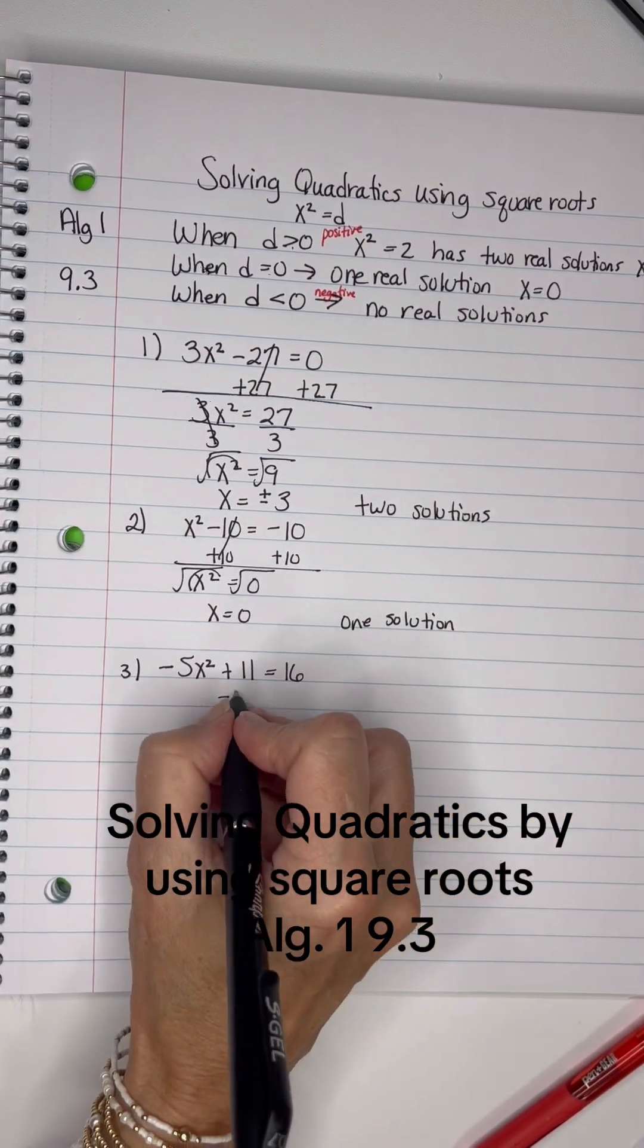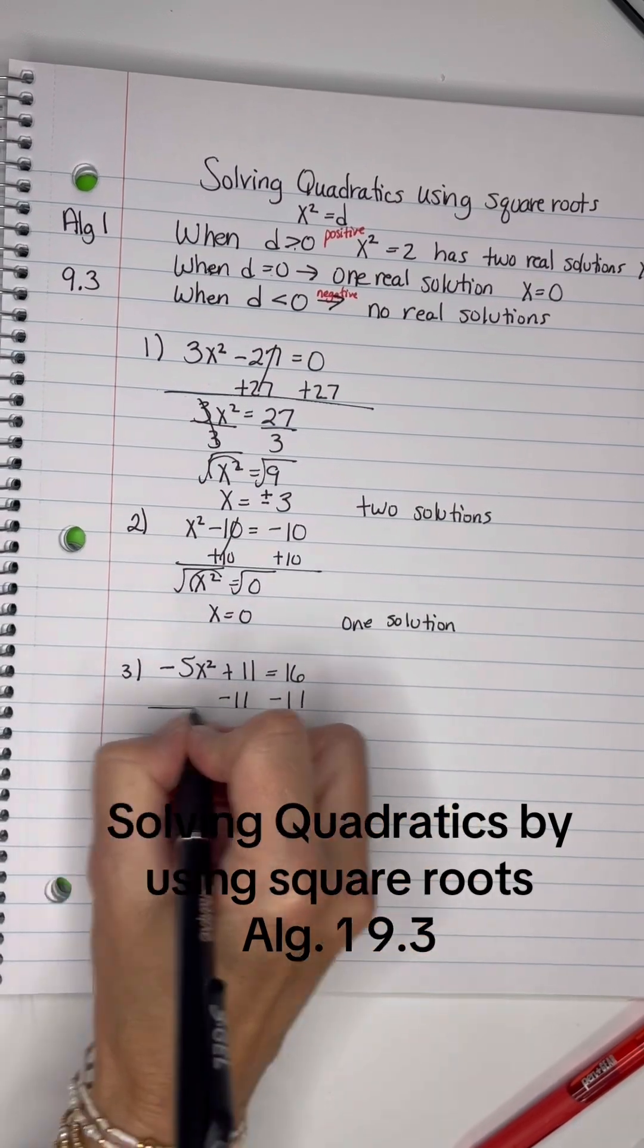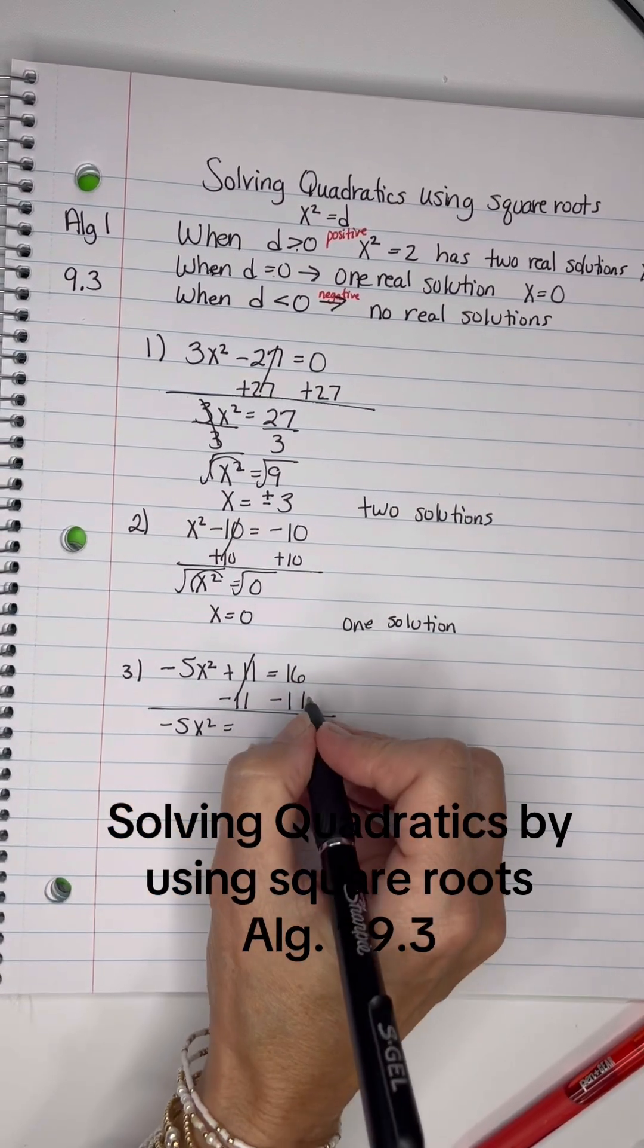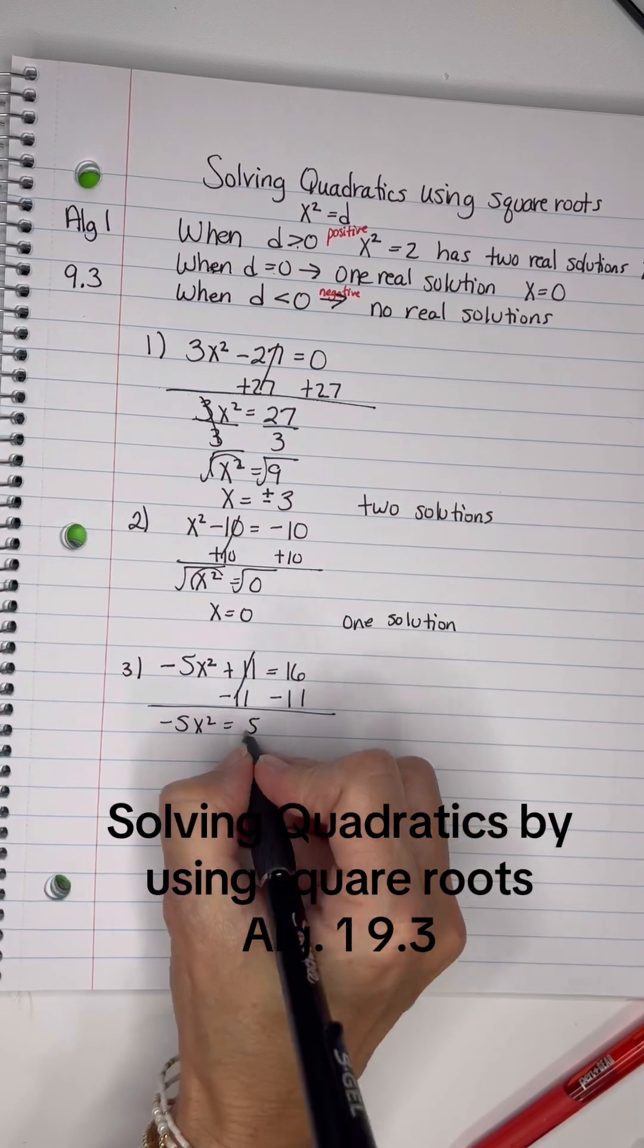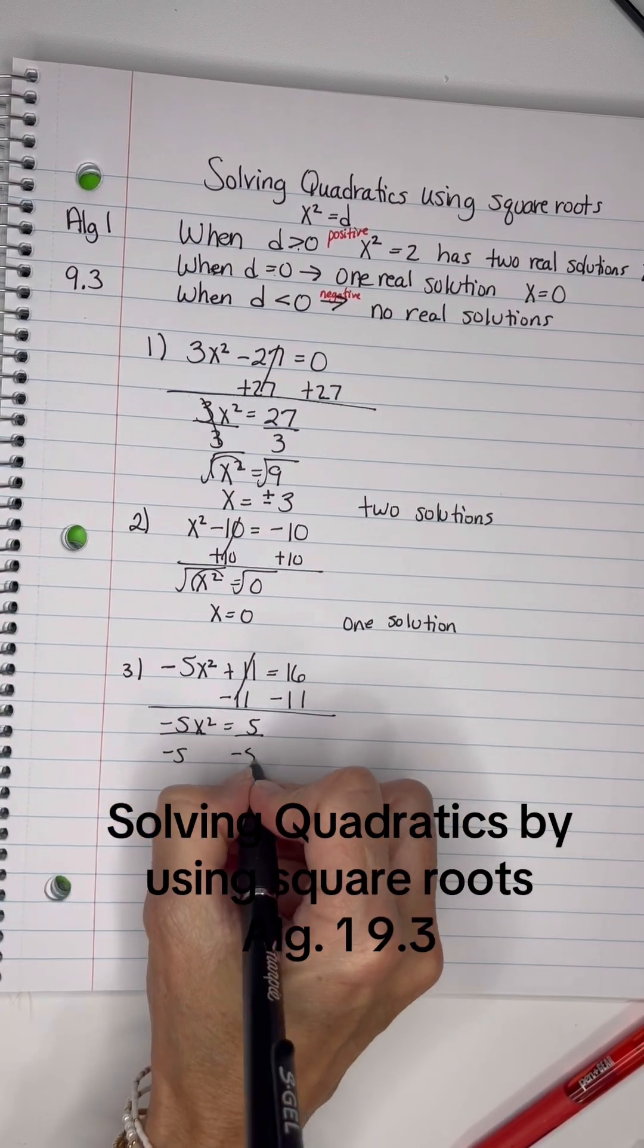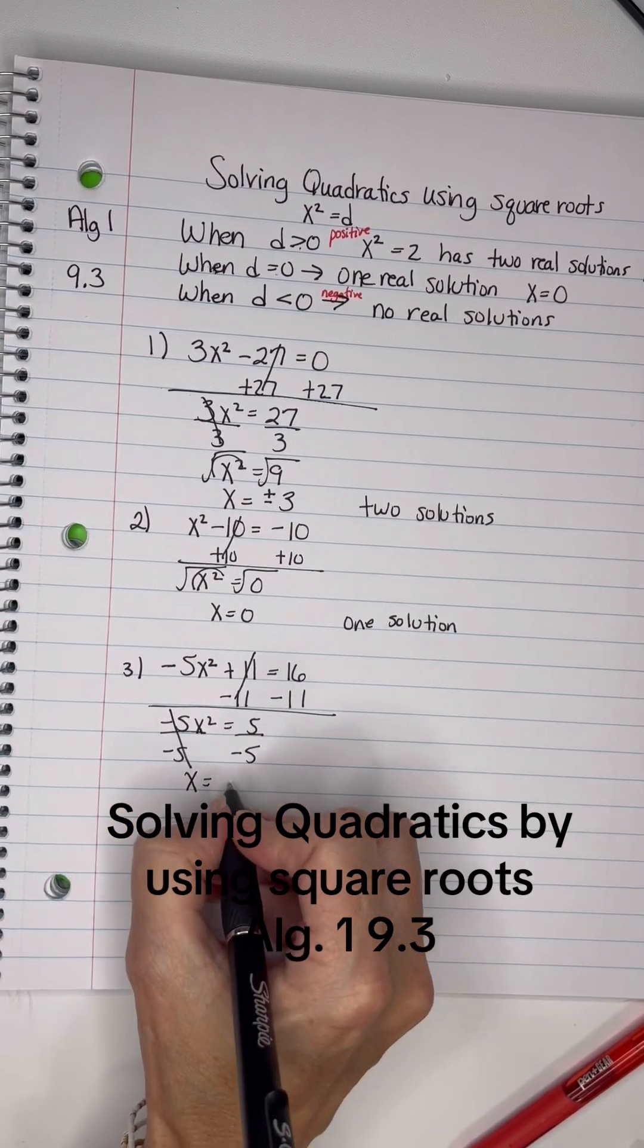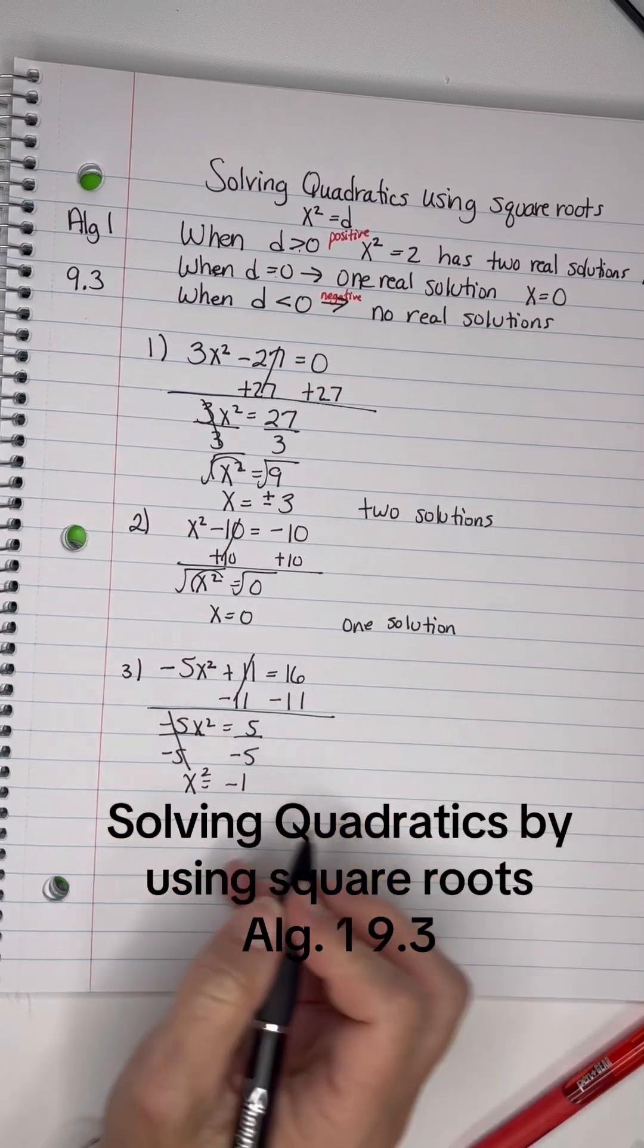Now let's look at this one. Let's subtract 11 from both sides. We have negative 5x squared equals 16 minus 11, which is 5. We'll divide by negative 5, so x squared equals negative 1.